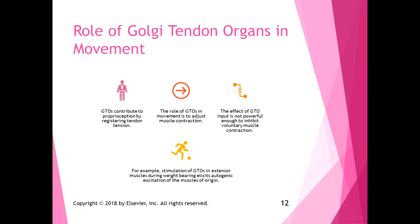Golgi tendon organs contribute to proprioception by registering tendon tension, and their role in movement is to make fine adjustments to muscle contraction — not powerful enough to inhibit voluntary contraction, but doing small adjustments to fine-tune movements. For example, stimulation of Golgi tendon organs in extensor muscles during weight bearing elicits autogenic excitation of those muscles, reinforcing the movement pattern. Think of Golgi tendon organs as reporting to the cerebellum to smooth out movements and eliminate unwanted ones.